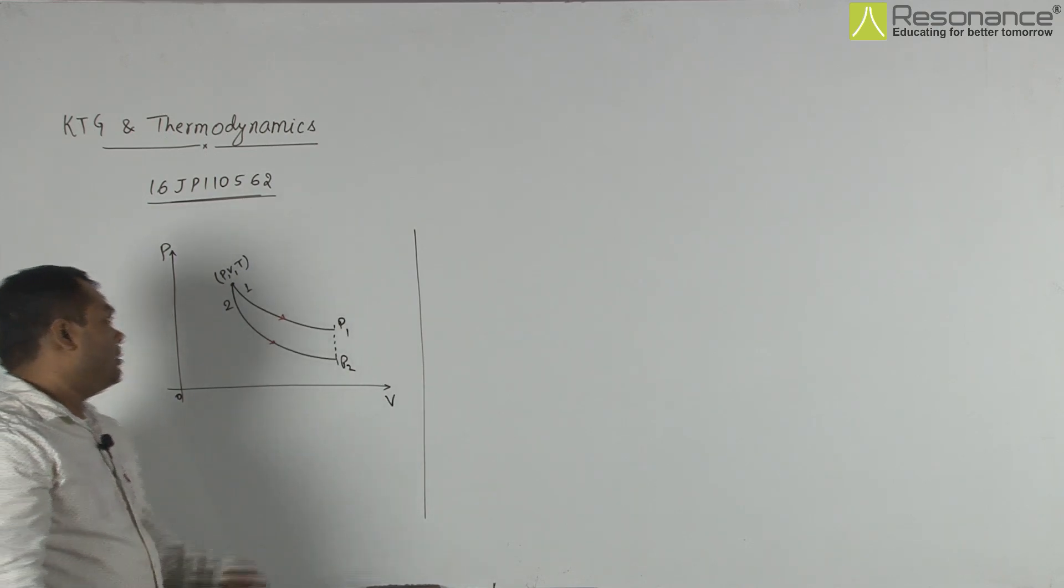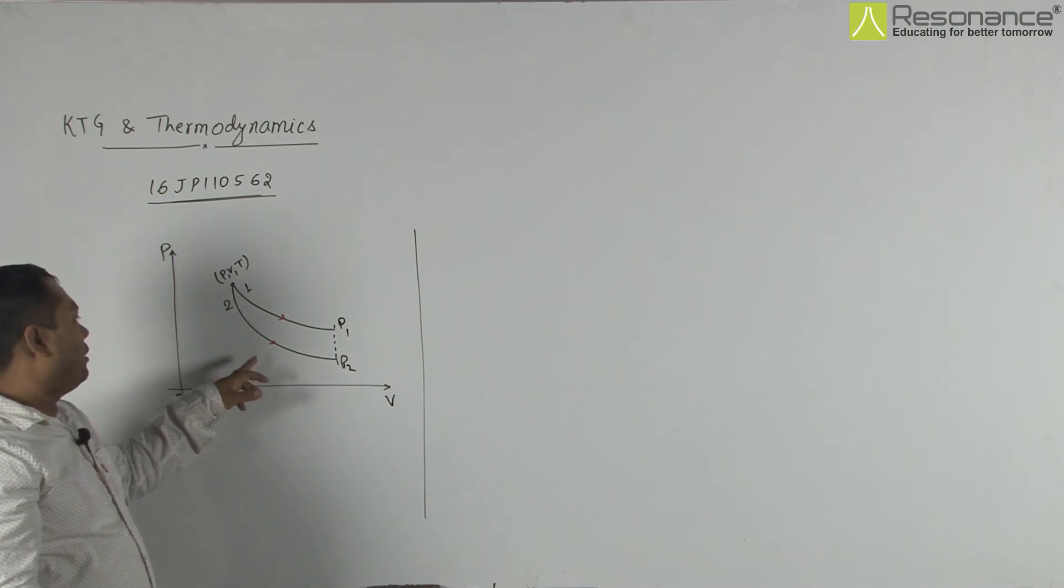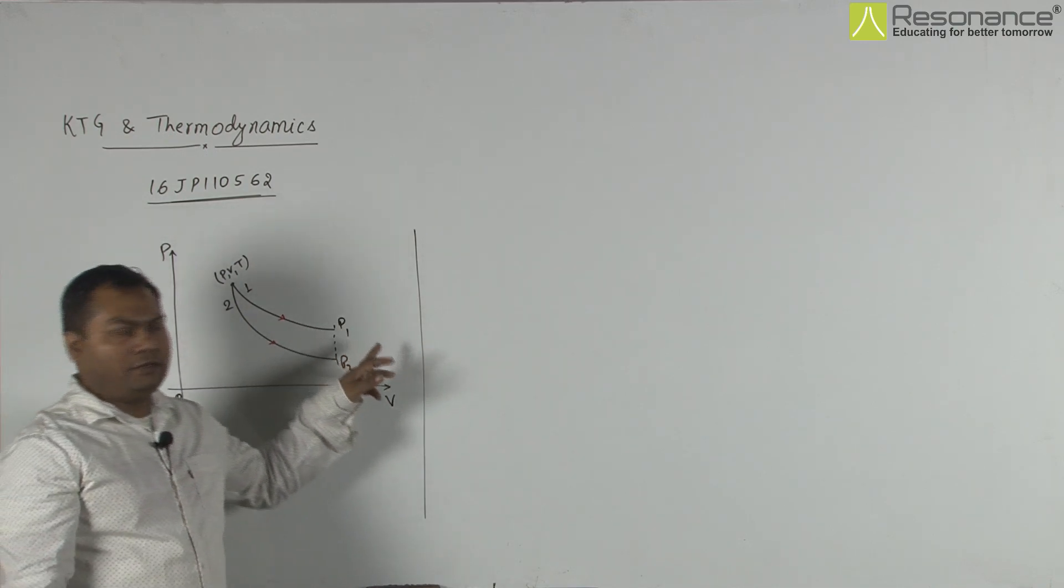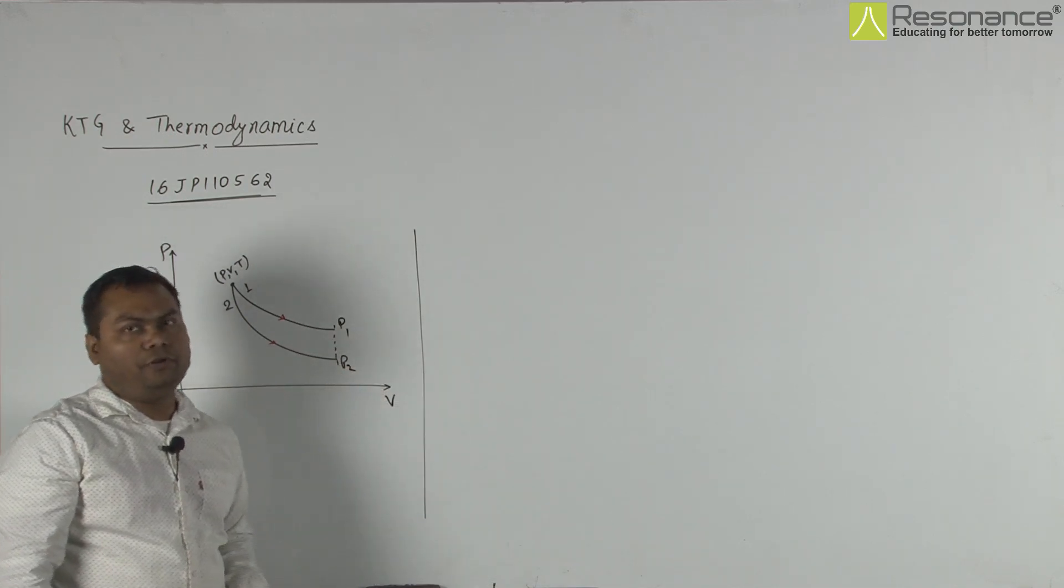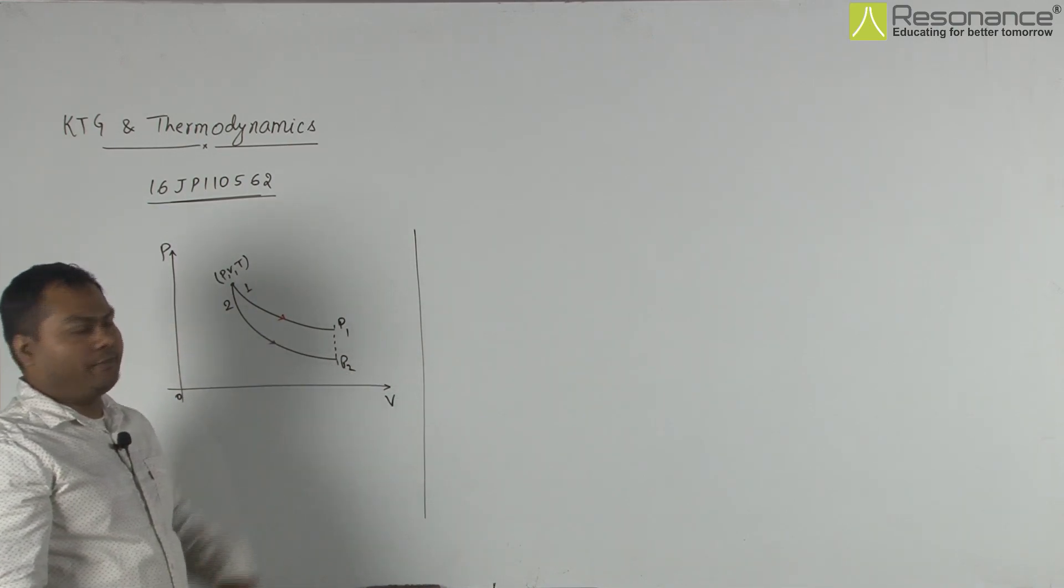It is given that these two have the same state P-V-T. And it is asking to find the relation between P1 and P2, where the volume for these two is the same.